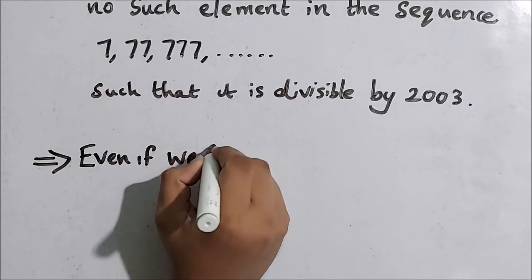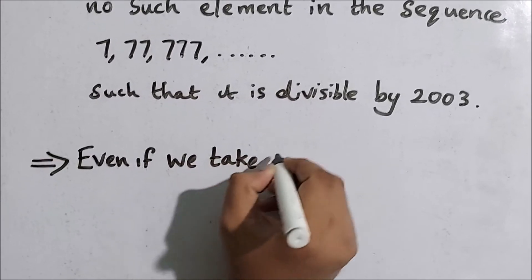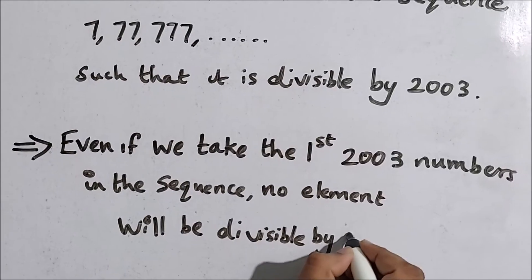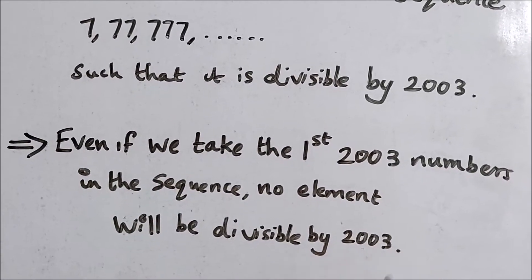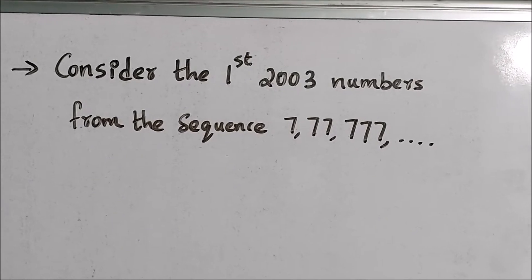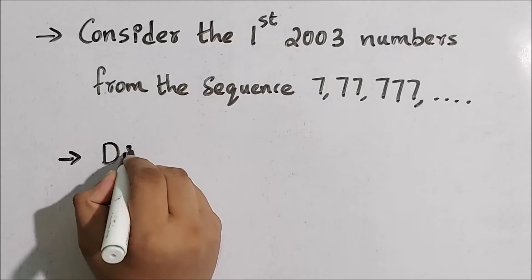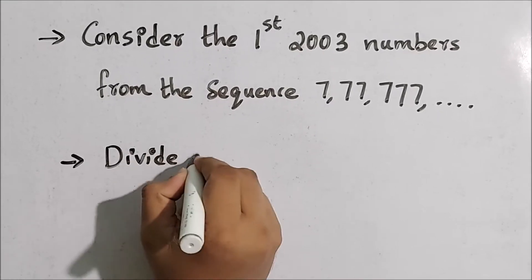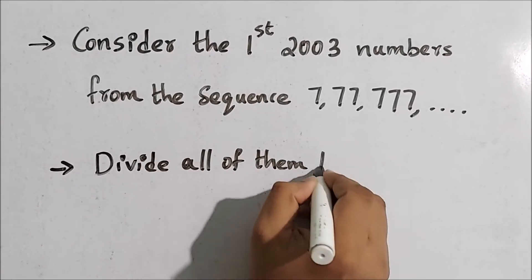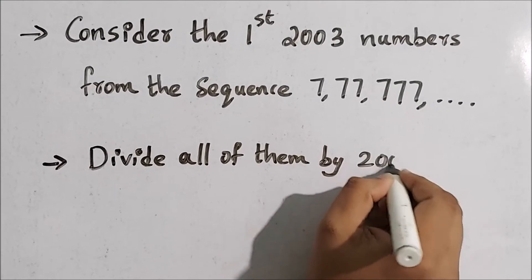Our assumption implies that even if we take the first 2003 numbers in the sequence, no element will be divisible by 2003. So now consider the first 2003 numbers from this sequence. We are going to take those first 2003 numbers and divide all of them by 2003.